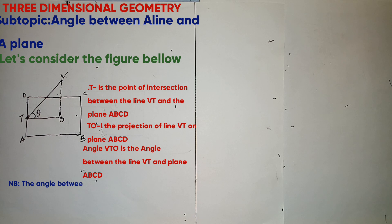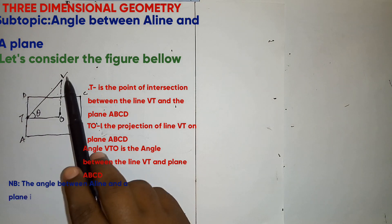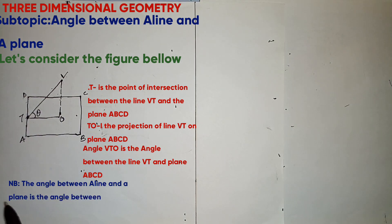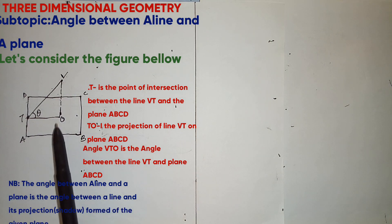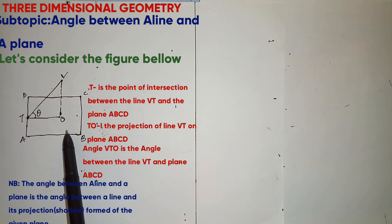So note, the angle between a line and a plane will be equal to the angle between the line and its projection on the plane given. So in this case the plane given is ABCD.